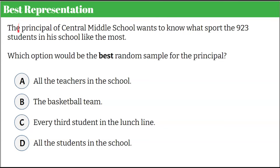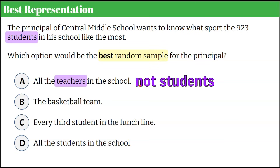When we talk about best representation, the principal of Central Middle School wants to know what sport the 923 students liked the most. We're asked which option would be the best random sample. Option A is all the teachers in the school. These are not students — the principal wants to know what students think, and teachers are not part of that population. So we eliminate option A.